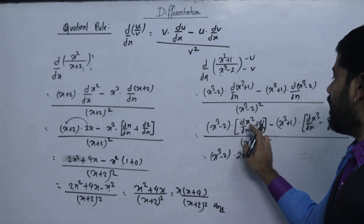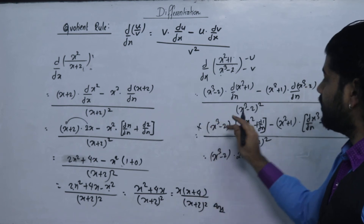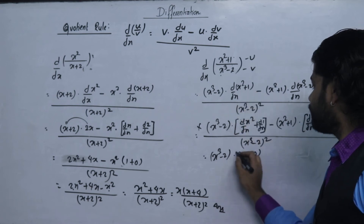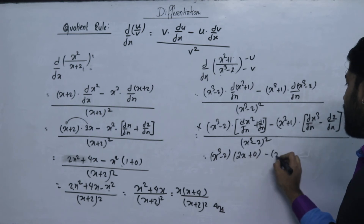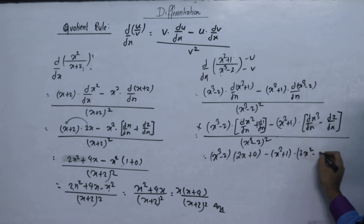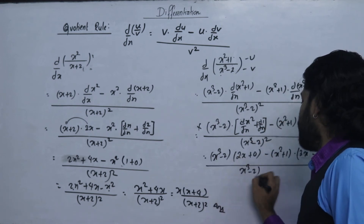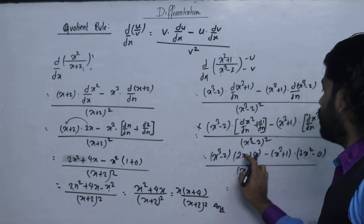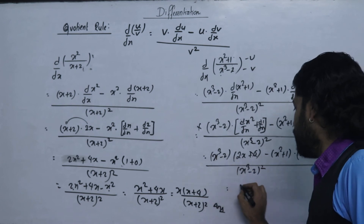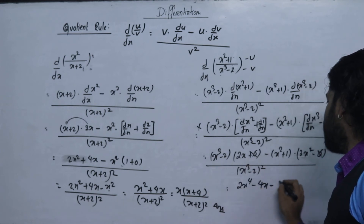Then x will give 2x. We take the derivative of x cubed, which gives 3x squared, and minus 0 for the constant. So we get (x cubed minus 2) squared in the denominator. Multiplying out: 2x into x cubed gives 2x to the power 4, minus 2x into 2, minus x squared times 3x squared.